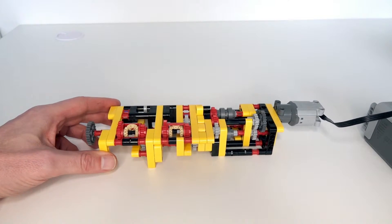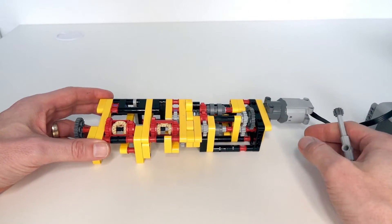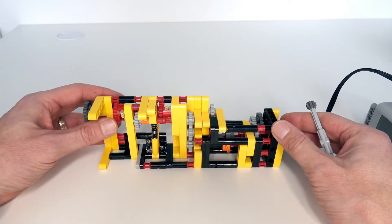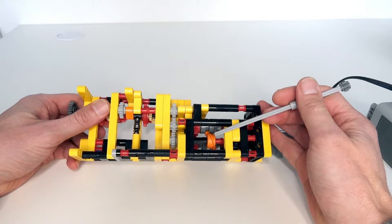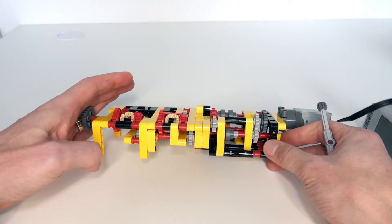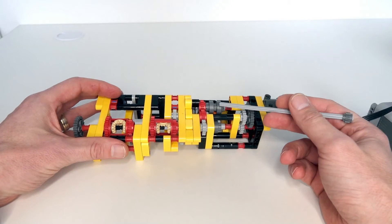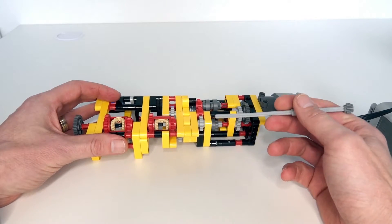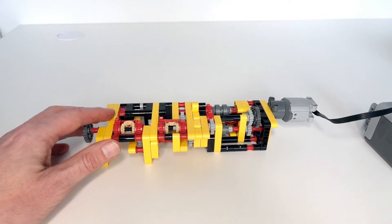The final part of the gearbox is the gearing that switches between the forward and reverse directions. The way I've done that is using a combination of a rotary switch and a differential. So the rotary switch, which is between two different gears, and these gears feed into this differential over here.